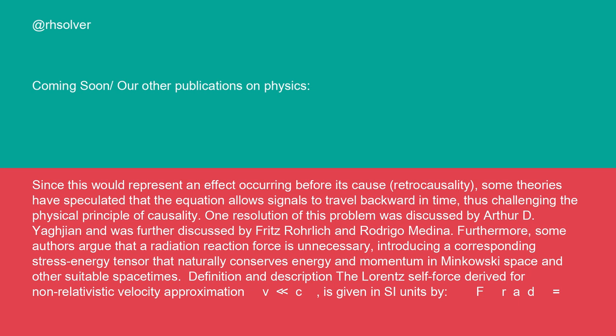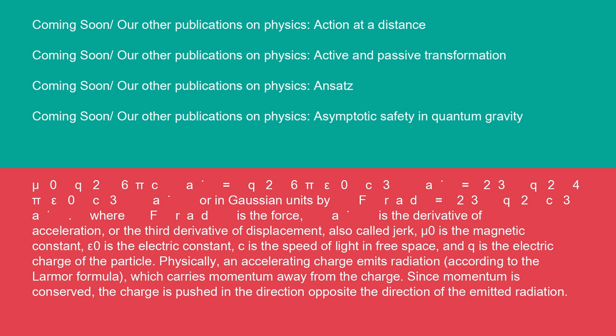Definition and description: the Lorentz-Lorentz self-force derived for non-relativistic velocity approximation, V much less than C, is given in SI units by F_rad = μ₀q²/(6πc)A = q²/(6πε₀c³)A = (2/3)(q²/(4πε₀c³))A, where A is the derivative of acceleration or the third derivative of displacement, also called jerk. μ₀ is the magnetic constant, ε₀ is the electric constant, C is the speed of light in free space and Q is the electric charge of the particle.